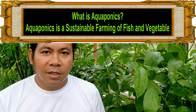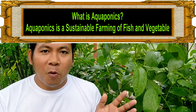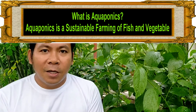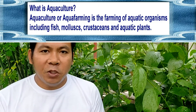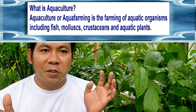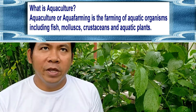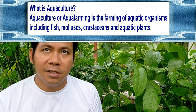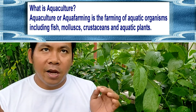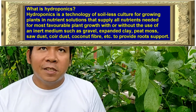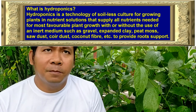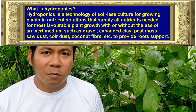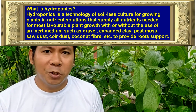So what is really aquaponics? Aquaponics is the farming of fish and plants. First we have aquaculture, which is growing fish and other aquatic animals, and hydroponics, which is growing plants without soil.